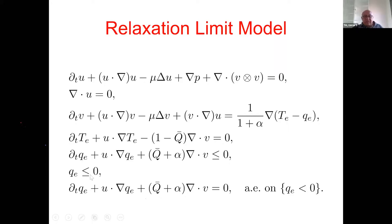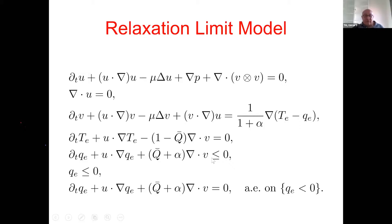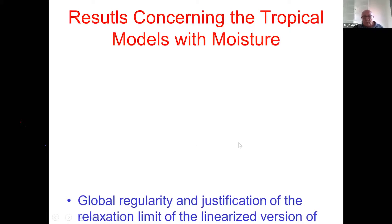In the limit ε→0, instead of a differential system you obtain differential equations coupled with differential inequalities. We show this limit system has existence and uniqueness. The result with Jinkai Li is global well-posedness and justification of the nonlinear relaxation limit: the error between the ε-system and the limit is O(√ε), giving quantitative convergence useful for numerical computation. Earlier work on the linearized version was by Majda and Souganidis.